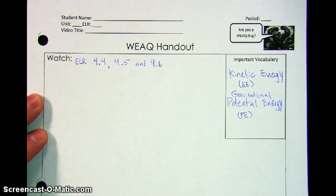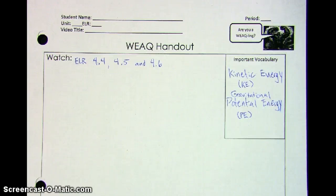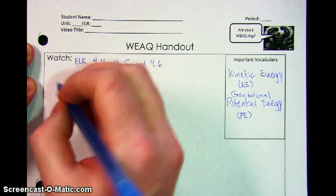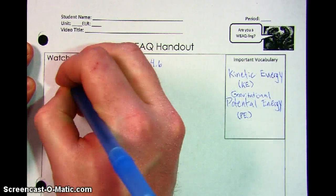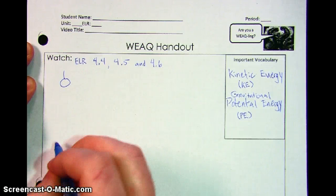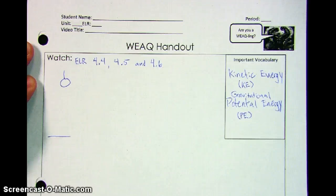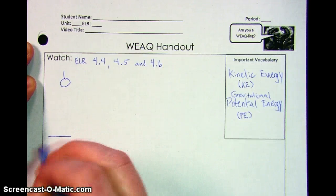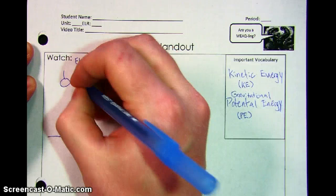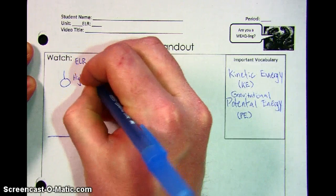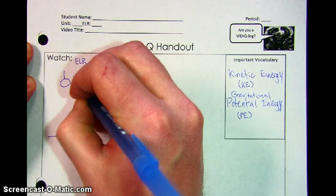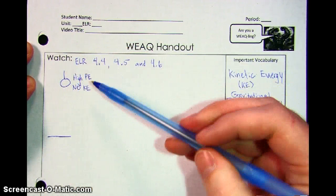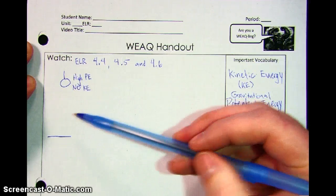As we talked about in class, there are a multitude of other kinds of potential energy, but for the purposes of this video we're going to stick with the type that just happens because you're holding something up in the air. For example, let's say you've got a bowling ball attached by a string to a ceiling, raised up high above the floor. Because it's way up in the air and it's not moving, we're going to say it has a high amount of potential energy and no kinetic energy — since it's way up in the air it has the potential to fall, and no kinetic energy because it's not moving.